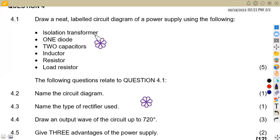We have got an isolation transformer, one diode - so the one diode shows it's a half-wave rectification. Two capacitors, definitely talking about smoothing. An inductor, a resistor, and a load resistor.